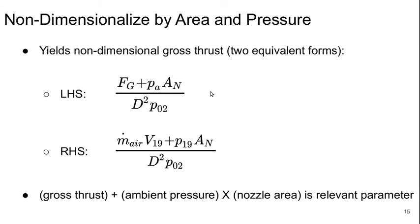Then we want to non-dimensionalize by the area and the pressure. Two equivalent forms if we work with the left hand side or the right hand side of the equation on the previous slide. It doesn't matter. And it's really this gross thrust plus ambient pressure times nozzle area way of looking at it that's sort of the more relevant parameter that we typically would take.